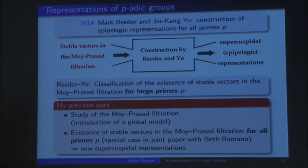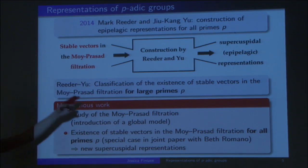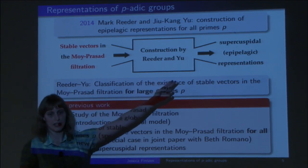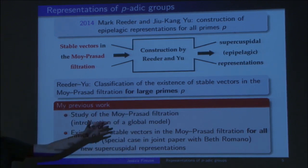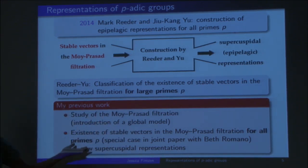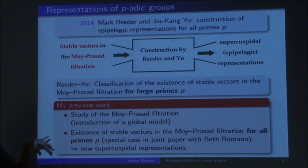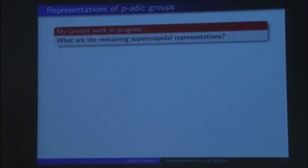So that was my first work. What to do next? We have this ocean with the epipelagic zone, and we get new epipelagic representations. The obvious question is: what happens at higher depths? For large primes, everything is fine. But what I'm interested in right now is looking at the deeper parts of the ocean for small primes and finding all the remaining supercuspidal representations. That's one of the projects I'm currently working on here.